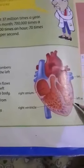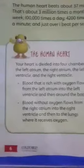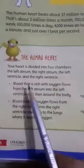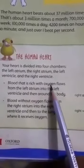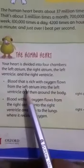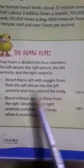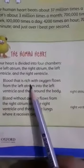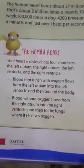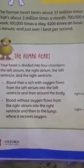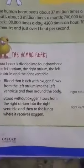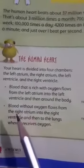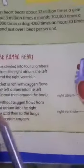Blood that is rich with oxygen flows from the left atrium into the left ventricle. Blood which is rich in oxygen flows from the left atrium into the left ventricle and then around the body.